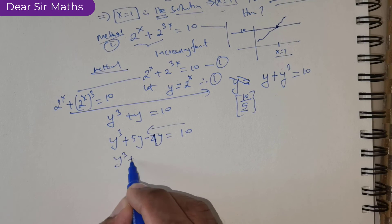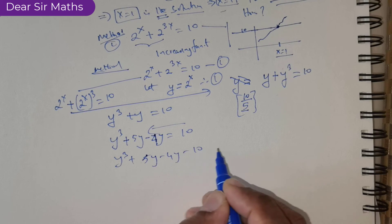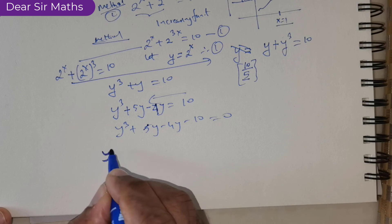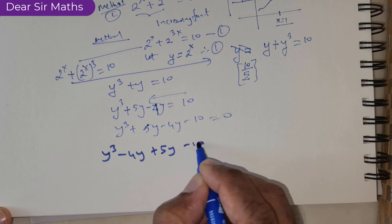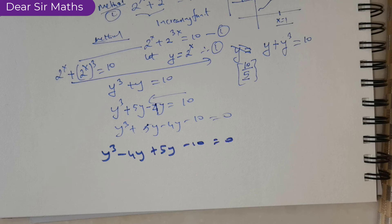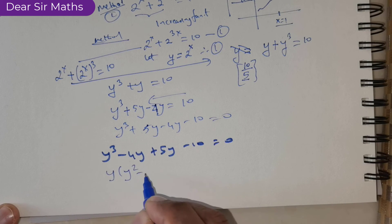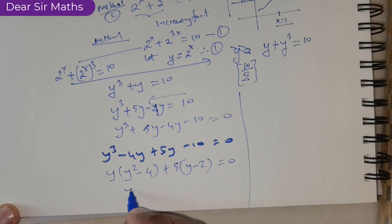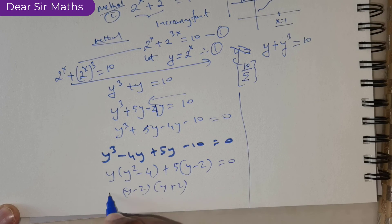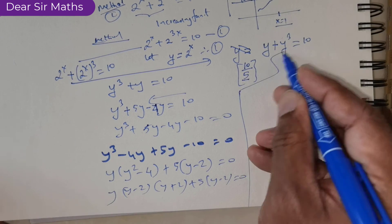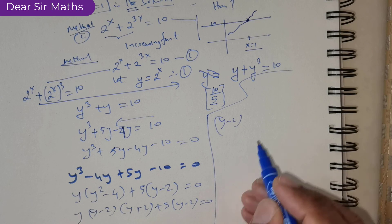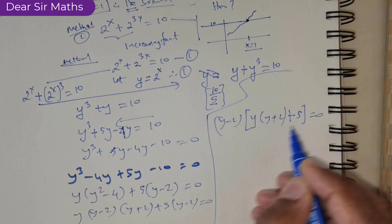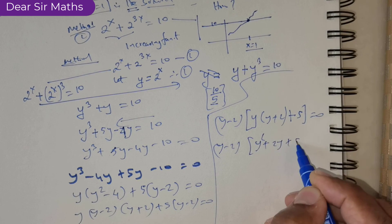Moving 10 to the other side gives y cubed plus 5y minus 4y minus 10 equal to 0, which I rearrange as y cubed minus 4y plus 5y minus 10 equal to 0. Factoring gives y times (y squared minus 4) plus 5 times (y minus 2) equal to 0, which is (y minus 2)(y plus 2) plus 5 times (y minus 2) equal to 0. Taking out (y minus 2) gives (y minus 2)(y squared plus 2y plus 5) equal to 0.